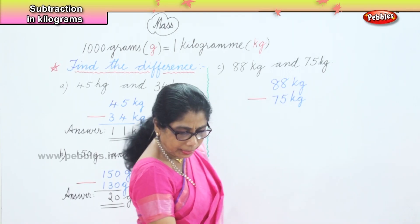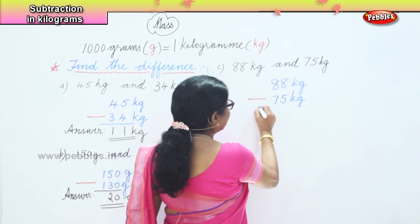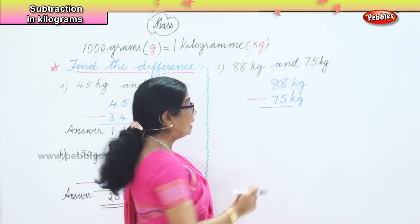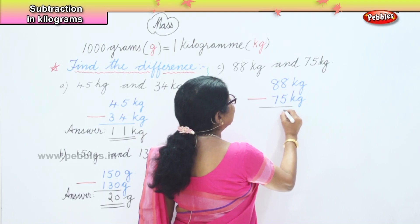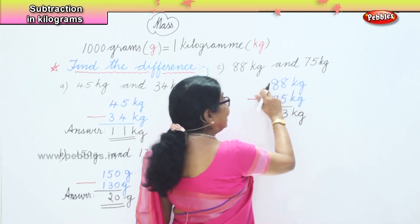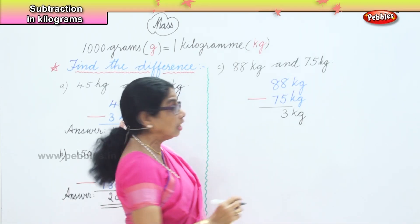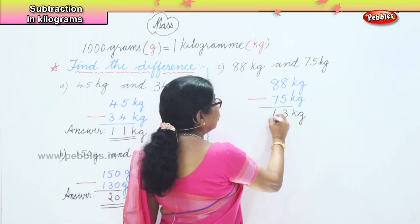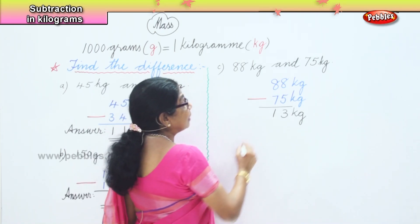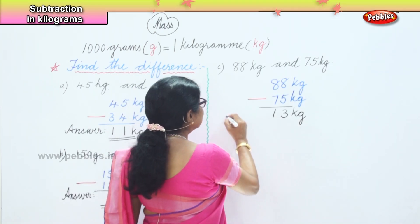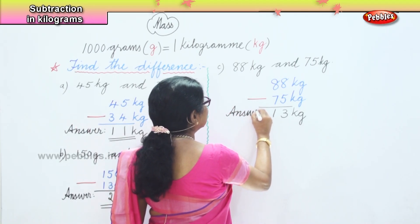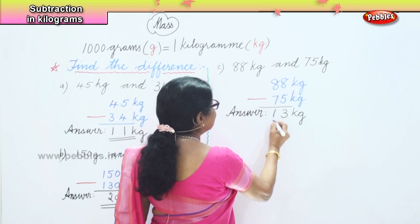8 take away 5 is 3. 8 take away 7 is 1. So 88 kilogram minus 75 kilogram — the answer is 13 kilograms.